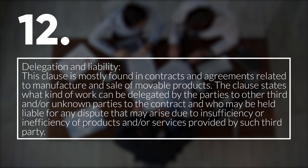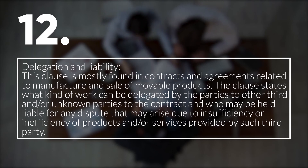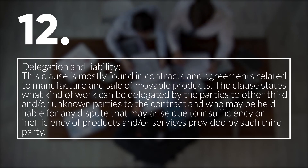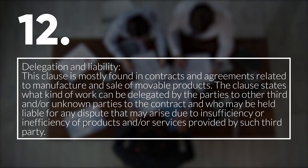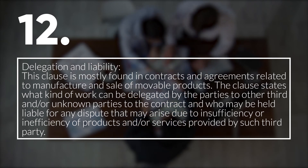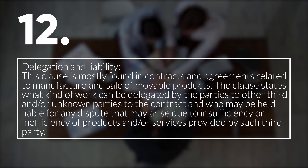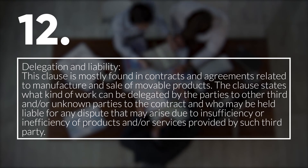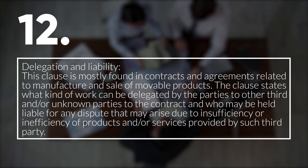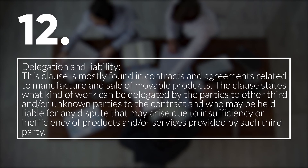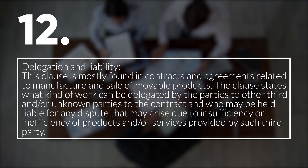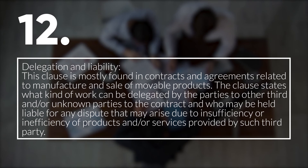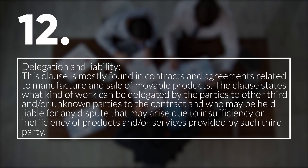12. Delegation and Liability. This clause is mostly found in contracts and agreements related to manufacture and sale of movable products. The clause states what kind of work can be delegated by the parties to other third and/or unknown parties to the contract and who may be held liable for any dispute that may arise due to insufficiency of products and/or services provided by such third party.